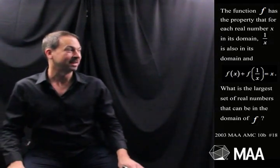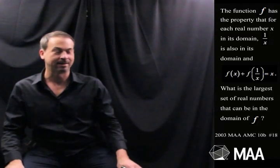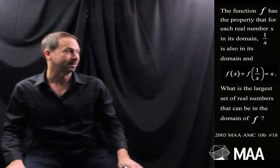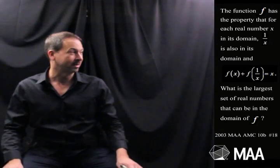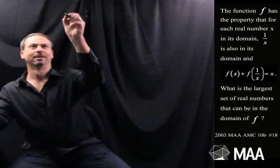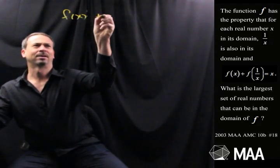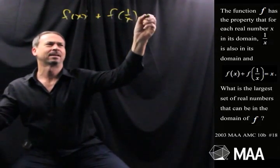The function f has the property that for each real number x in its domain, 1 over x is also in its domain, and f of x plus f of 1 over x equals x. Hang on, let me write that down. f of x plus f of 1 over x equals x.